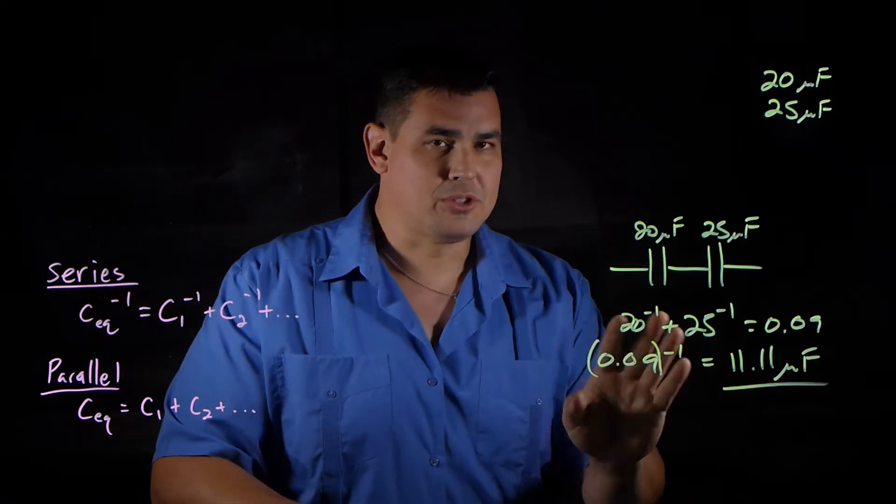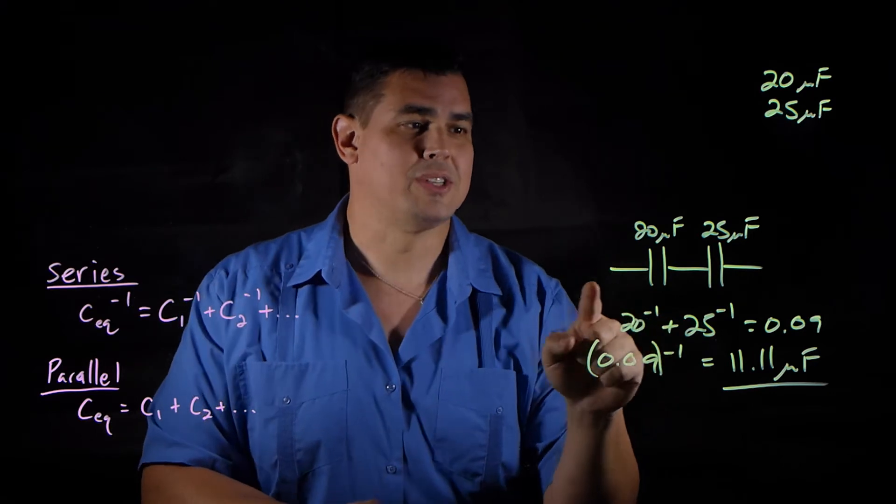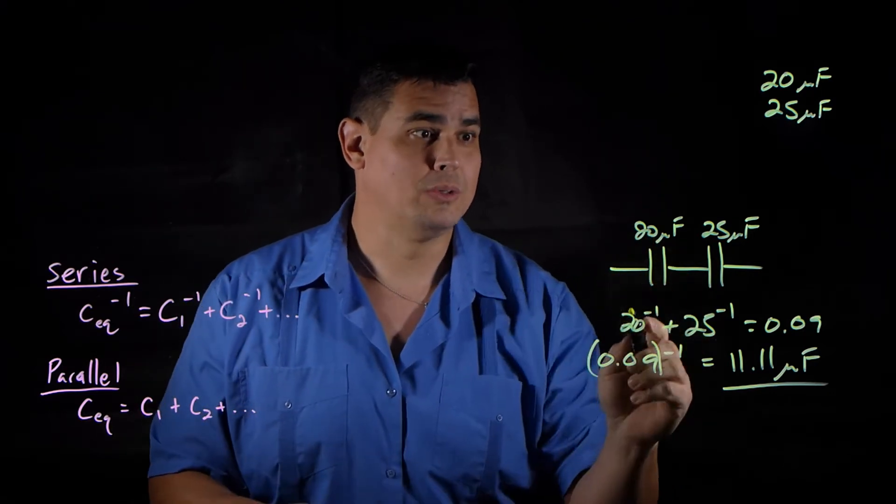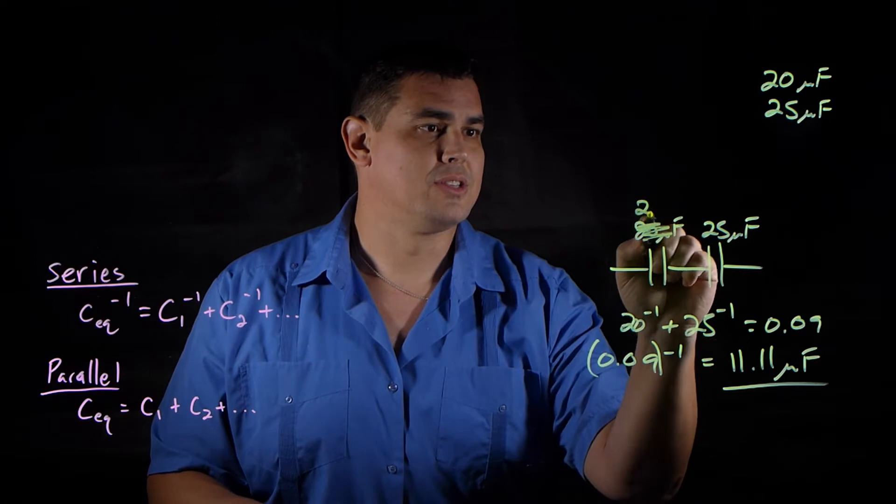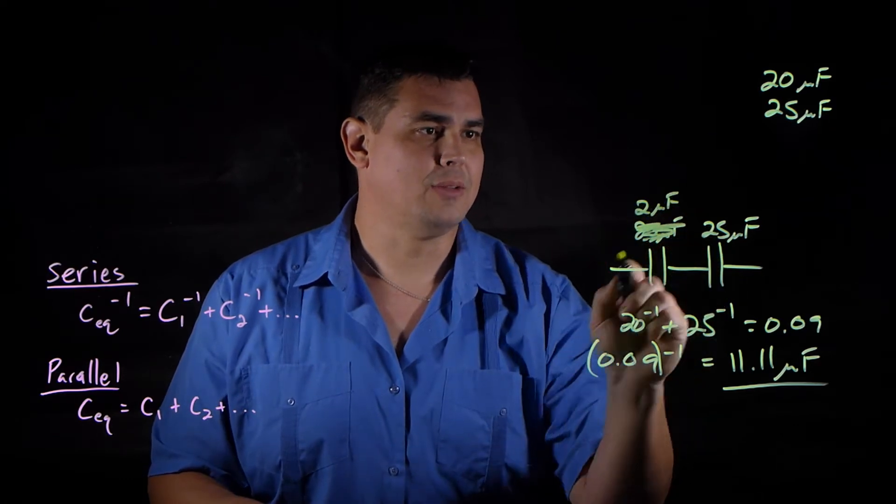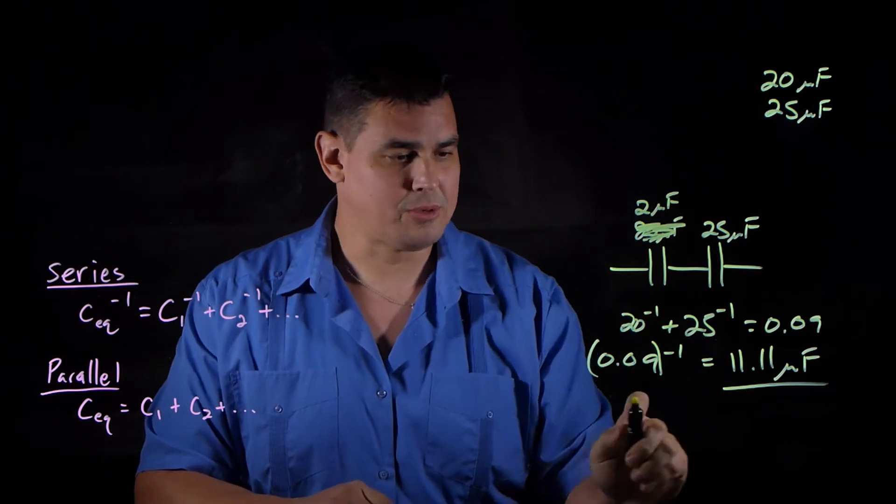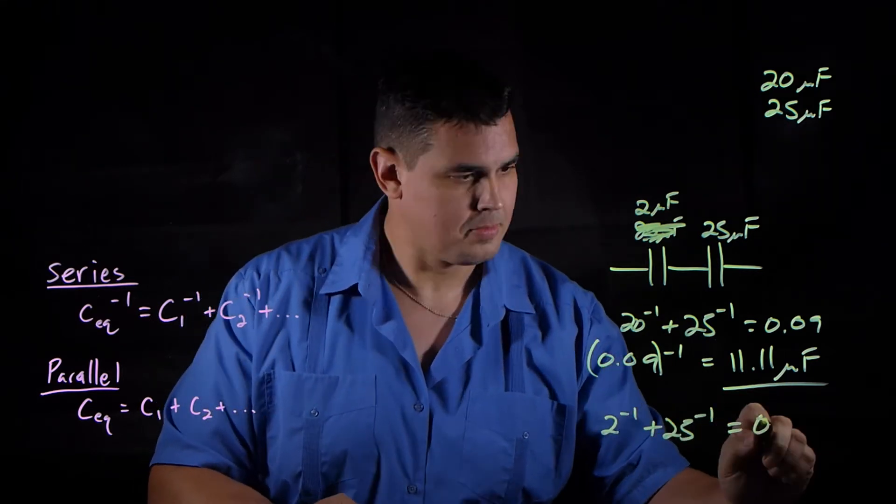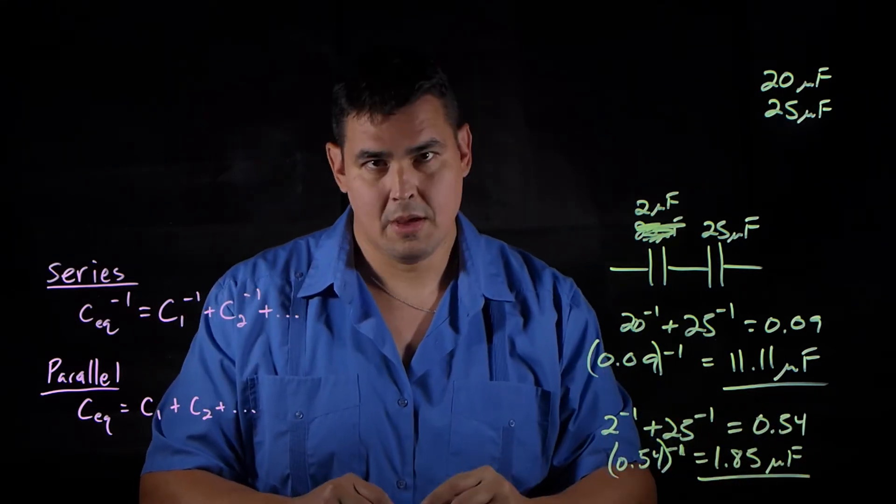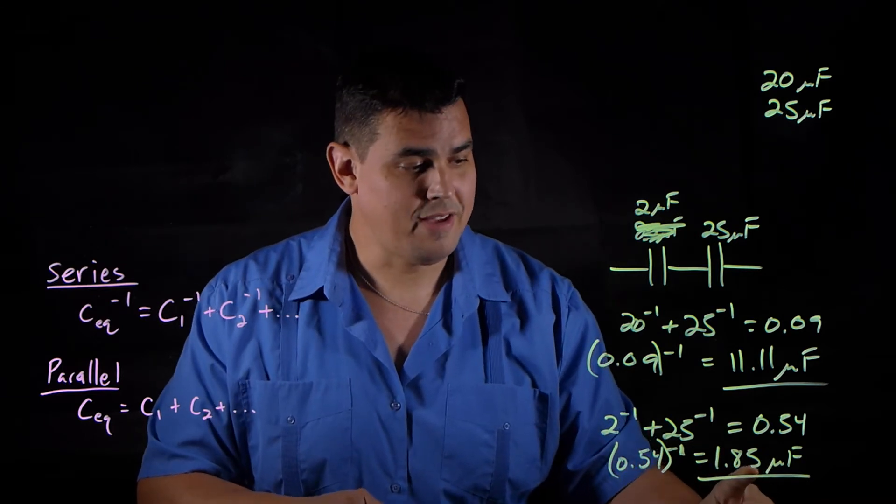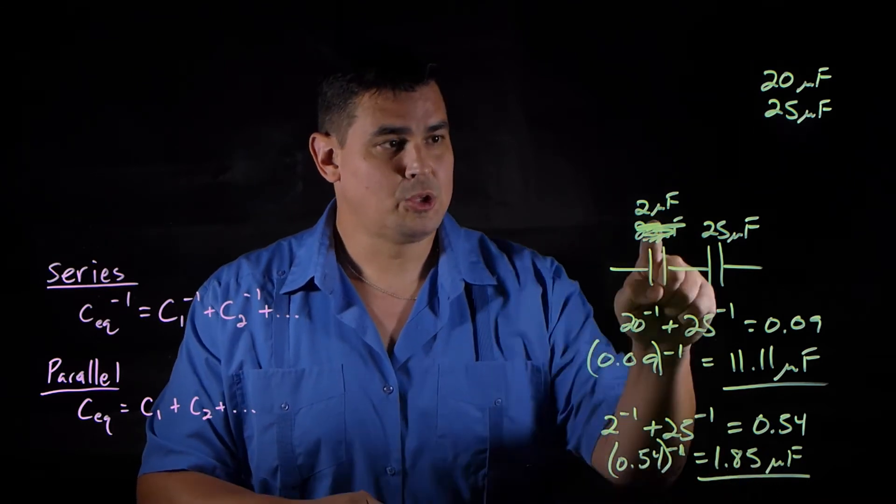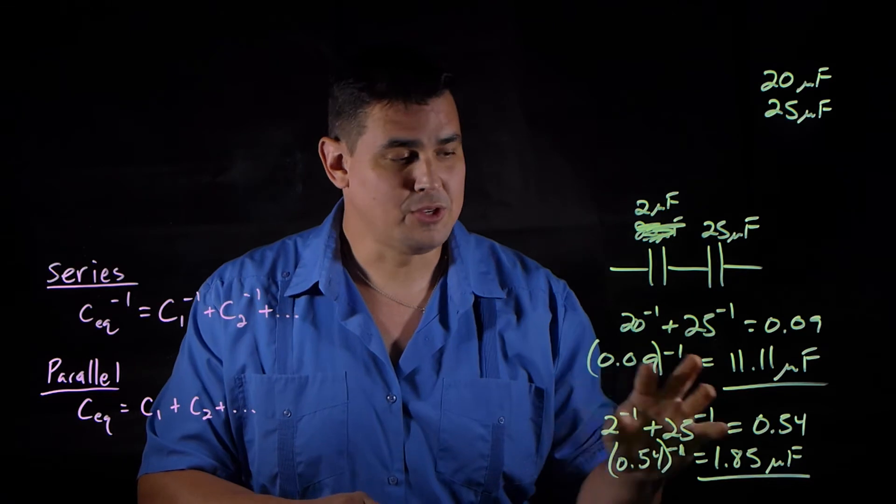So let me just show you an example, something interesting. So let's say instead of 20, I make this one 2. So this is going to be 2 microfarads now. So let's look at if I added those two. I'm just going to do it real quick. So I got 1.85 microfarads when I made 2 and 25.